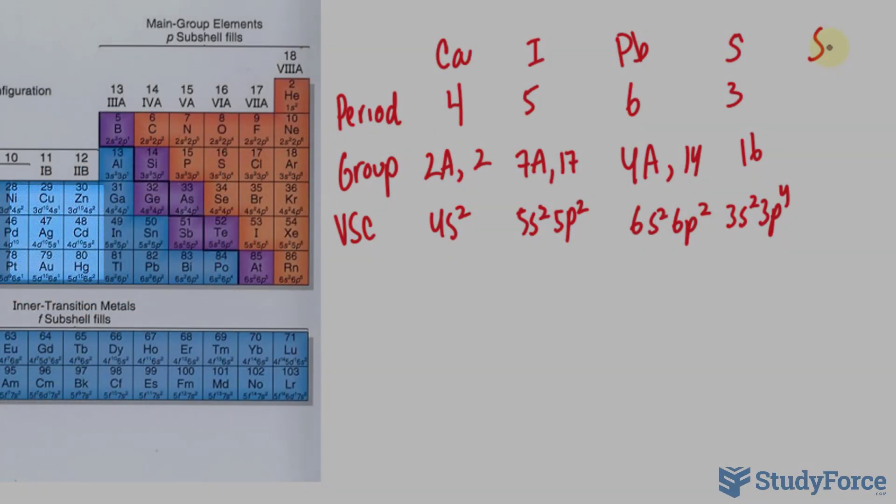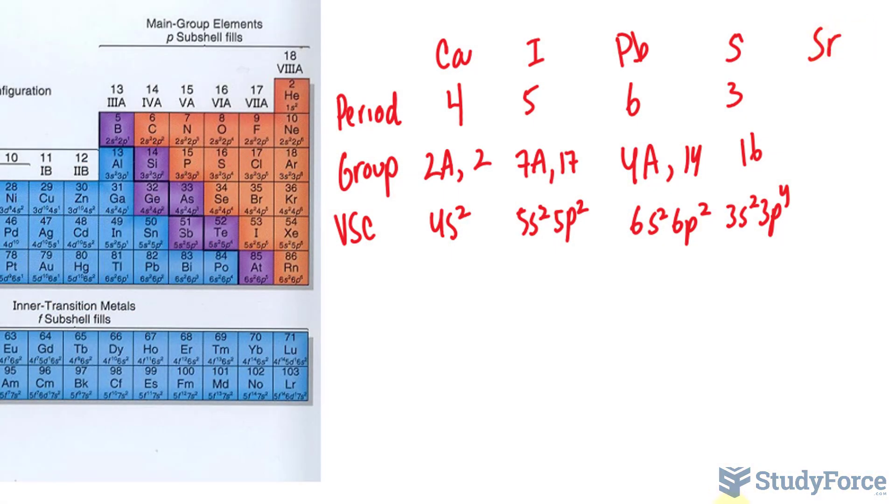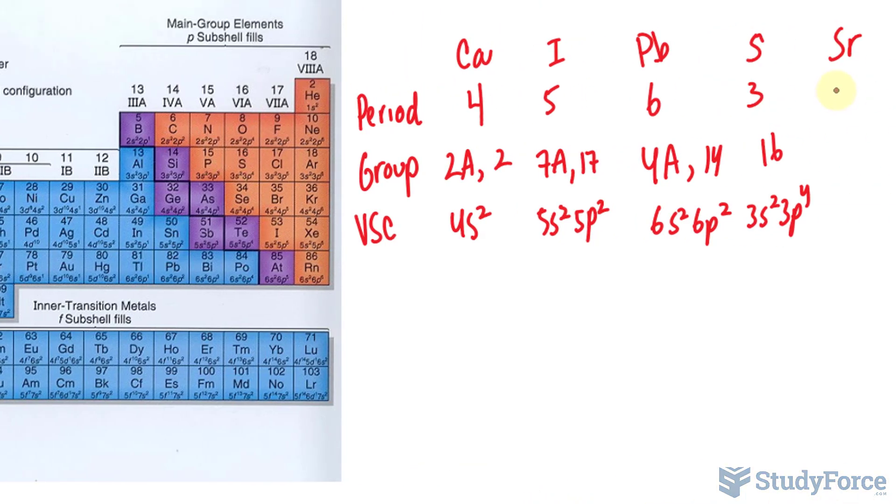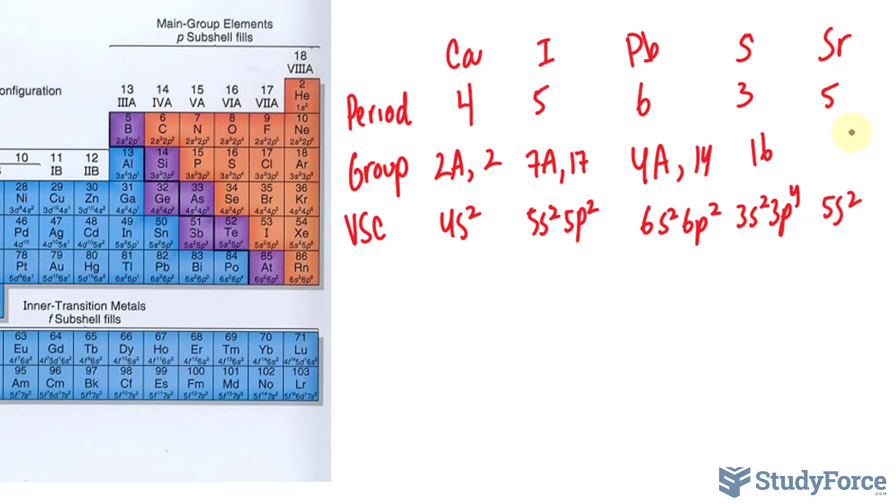And for strontium, which has the chemical symbol of Sr, it's found right here. It's the 38th, also an alkaline earth metal. Its period is 5. Its electron configuration is 5s2. And given that it's an alkaline earth metal, its group is 2. And one more thing, I didn't mention that sulfur, given that it's in group 16, is called a chalcogen. So any element found in group 16 is called a chalcogen.